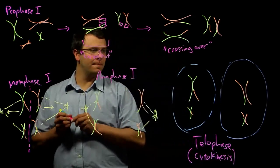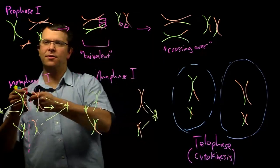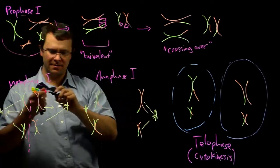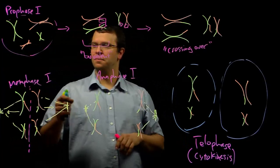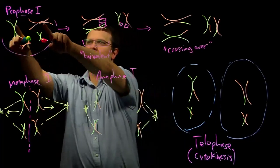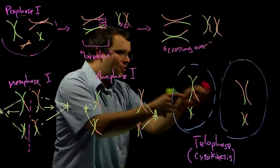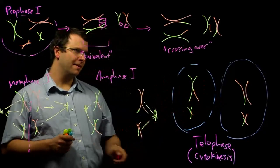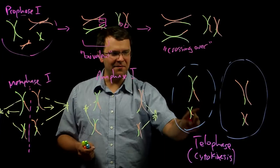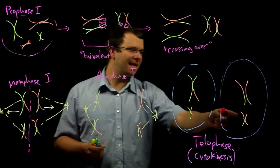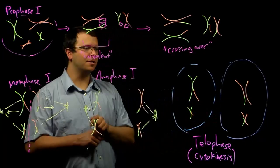And so if we started with a single cell that was diploid, two copies of each chromosome, one, two, and one, two, we've ended up with two cells that are haploid. This cell has one of each chromosome and this cell has another of each chromosome.